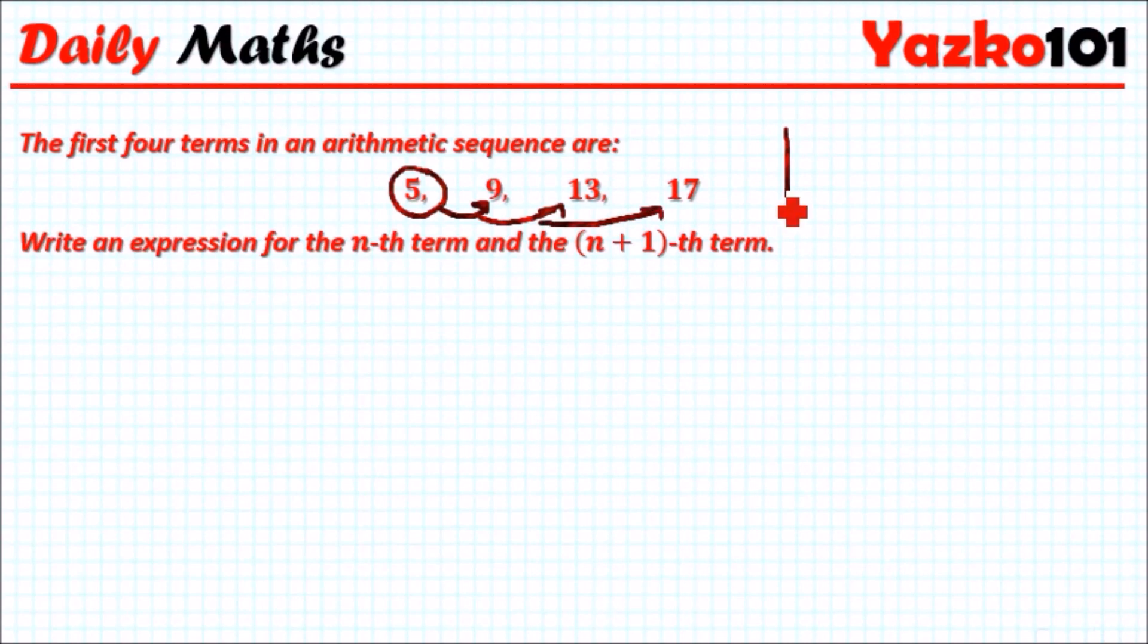We can let a be the first term here. So let a be 5 and d be the common difference. Thankfully they're going up in the same numbers. If they weren't then we need to find something known as the changing difference. But there is no changing difference. It's only going up in plus 4.